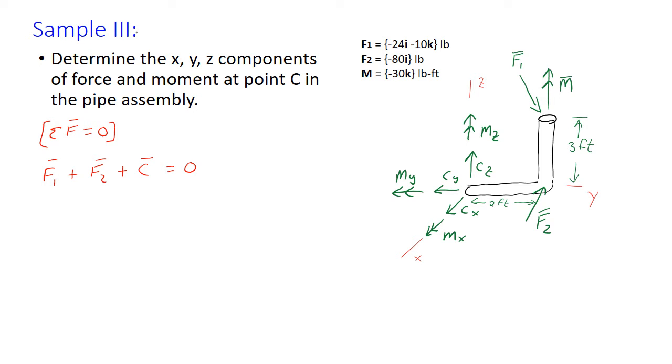Well we have F1, which is minus 24i hat minus 10k hat, that's in pounds. And then we have F2, which is minus 80j hat, that's in pounds. And then we have C, which is the components of Cx, Cy, and Cz: Cx i hat, this can be minus Cy because it's pointing negative, minus Cy j hat, plus Cz k hat. And the sum of all these are equal to zero.